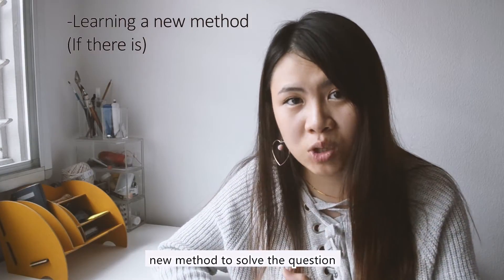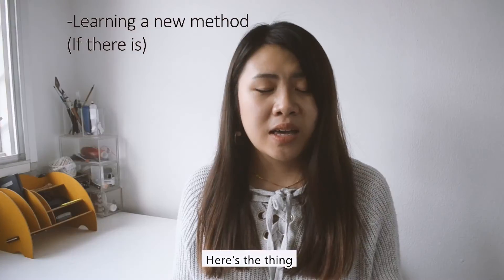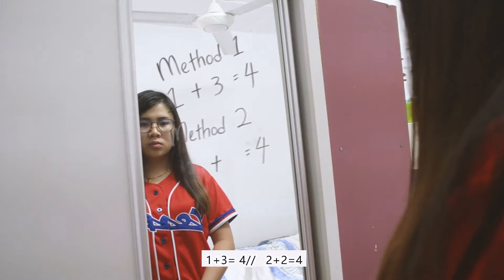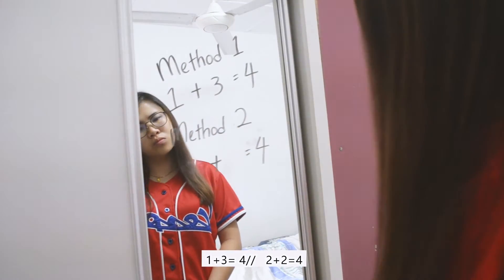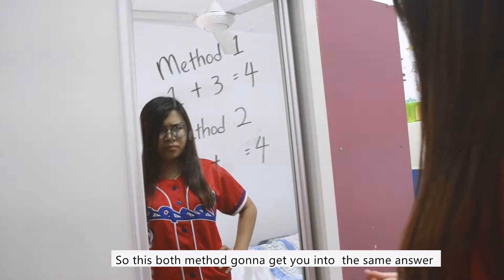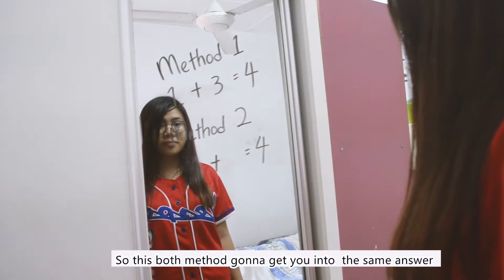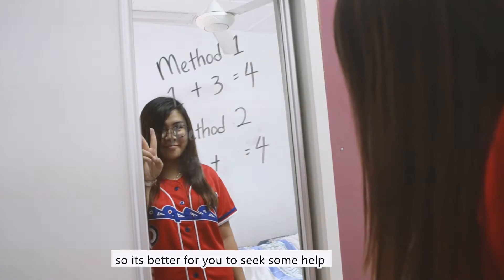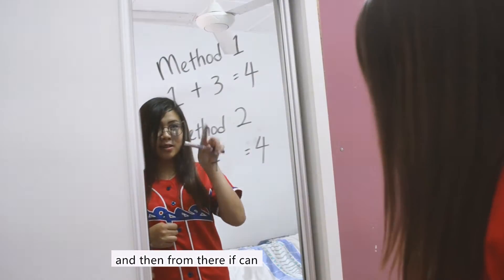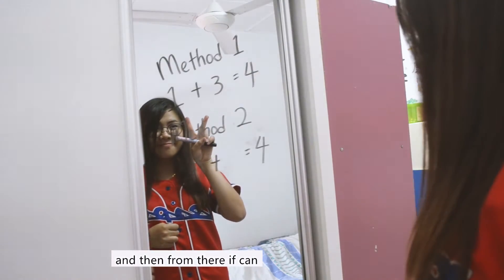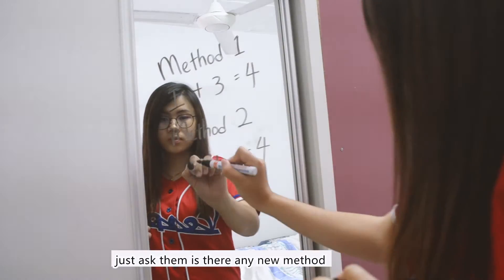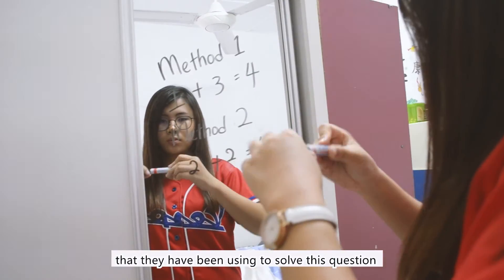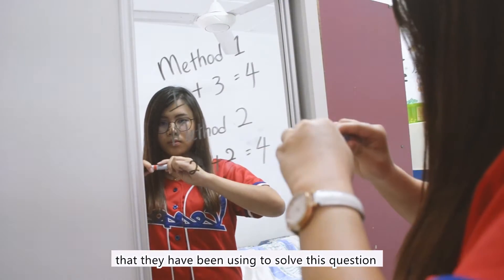There may be a new method to solve the question. For example, 1 plus 3 equals 4 and 2 plus 2 equals 4 as well — both methods get you to the same answer. So it's better to seek help and ask if there's another method they've been using to solve the question, and try to find a method that suits you.